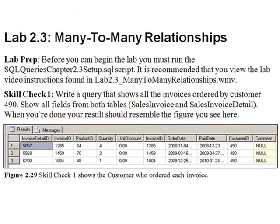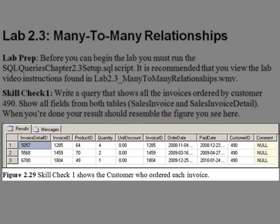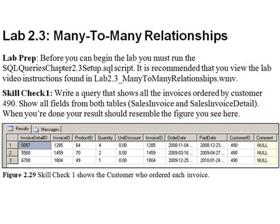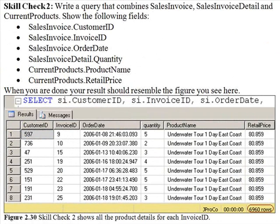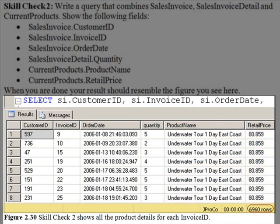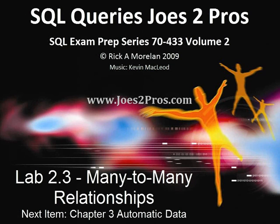Lab 2.3, skill check one: Write a query that shows all of the invoices ordered by customer number 490. Show all fields from both tables, sales invoice and sales invoice detail. When you're done, your result set should resemble the figure you see here. Skill check two: Write a query that combines sales invoice, sales invoice detail, and current products. Show the following fields: sales invoice customer ID, sales invoice invoice ID, sales invoice order date, sales invoice detail quantity, and from the current products table, product name and retail price. When you're done, your screen should resemble the figure you see here. That completes Lab 2.3 on many-to-many relationships. You can move on to Chapter 3, Automatic Data.